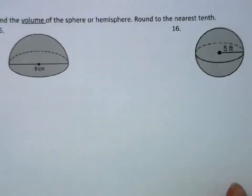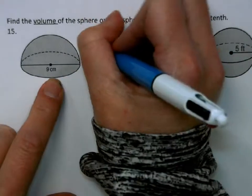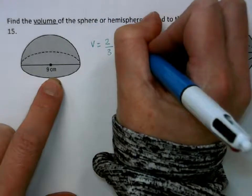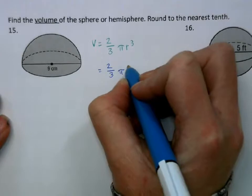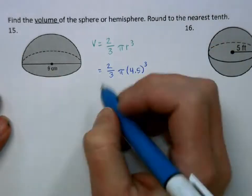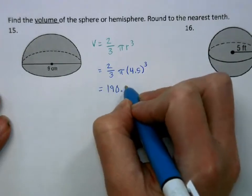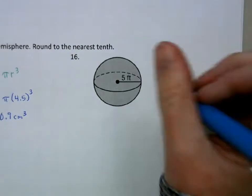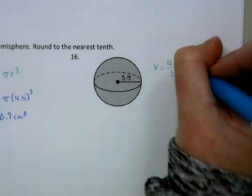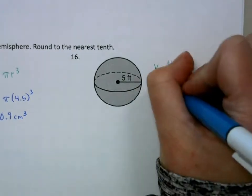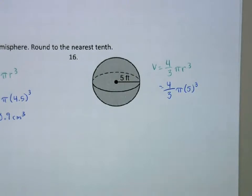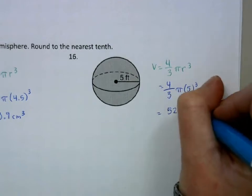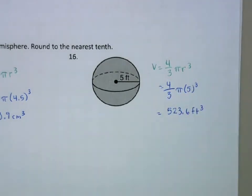For volume: this one is a hemisphere, so the volume is two thirds πr cubed. The radius is 4.5 since the diameter is 9, giving us 190.9 centimeters cubed. Our last problem is a sphere, whose volume is four thirds πr cubed. We have four thirds times π times 5 cubed, so we get 523.6 feet cubed. That is your Unit 6 test review — good luck.